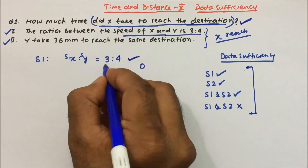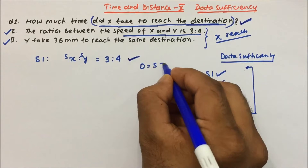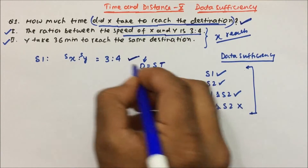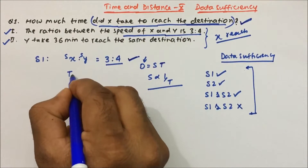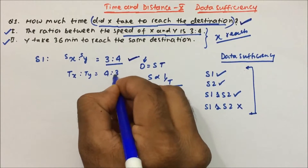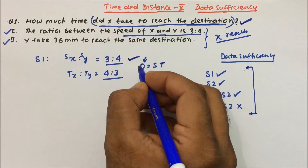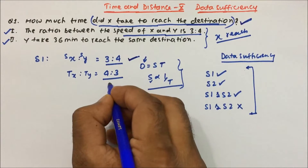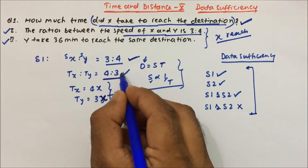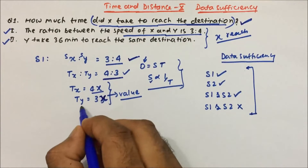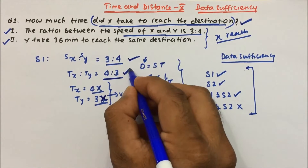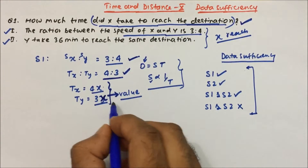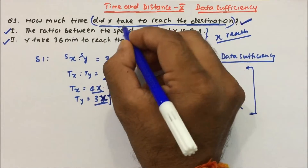What we can do is find the ratio in terms of time. Distance equals speed multiplied by time, so when distance is fixed, speed is inversely proportional to time. If the speed ratio is 3:4, then the time ratio becomes 4:3 (inverse). So time of x and time of y will be 4:3, meaning time of x is 4k and time of y is 3k. From Statement 1 alone, we cannot determine how much time x takes.